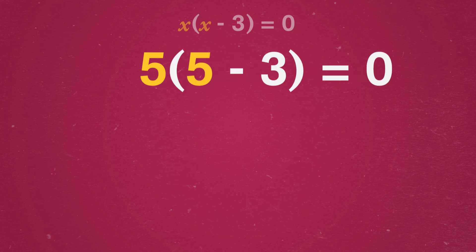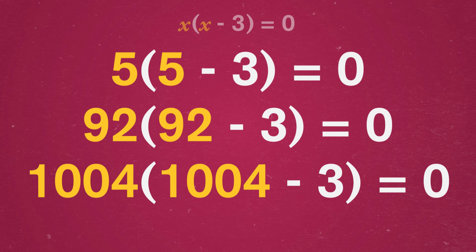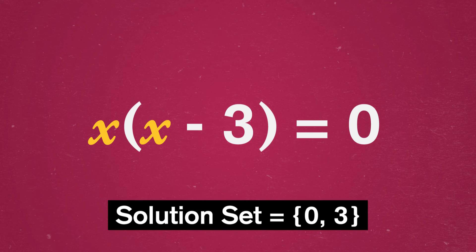And if we try anything else, like x equals 5, or x equals 92, or x equals 1004, we're multiplying two non-zero numbers and that will never be zero. So again, we have two solutions, zero and three. Basically equation solving is actually just truth hunting.